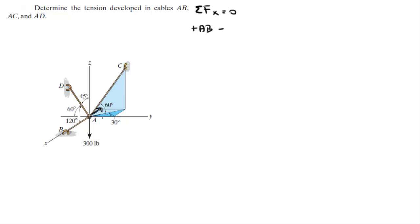To find this component of AC, we've got to find the projection of AC into the X and Y plane. Let me write it right here. AC into the X and Y plane is equal to AC times the cosine of 60 degrees, given right here, and that comes out to be 0.5 AC.